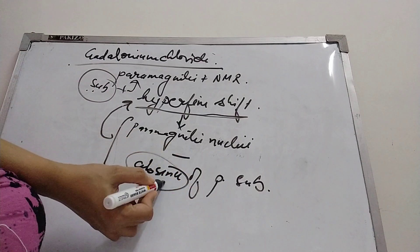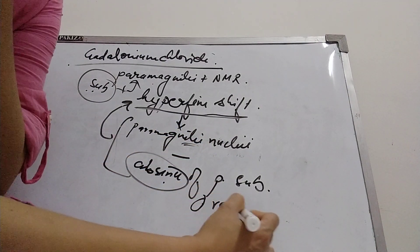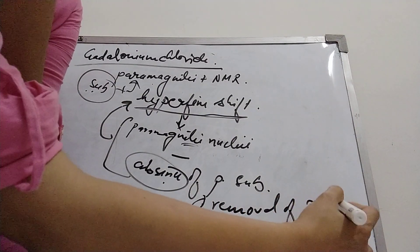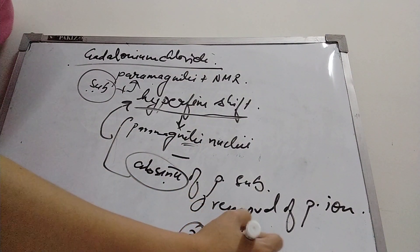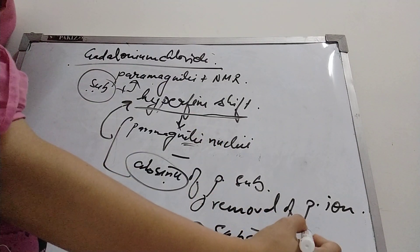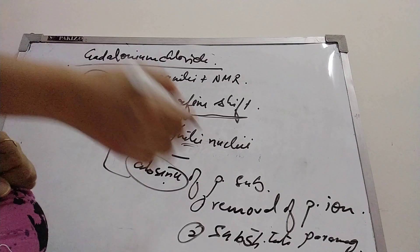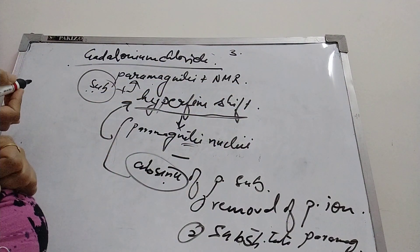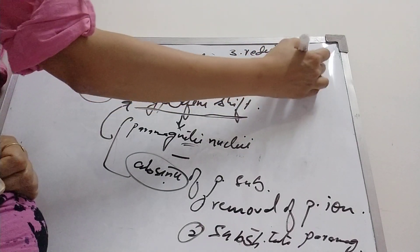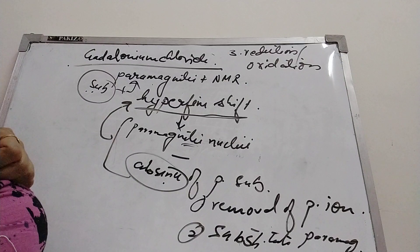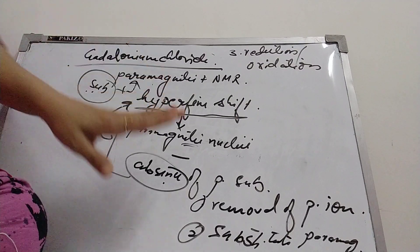There are three ways to determine hyperfine shift. First, we can remove the paramagnetic ions. Second, we can substitute a paramagnetic ion with a different one. Third, we can substitute the ion or change the oxidation state so that it changes to a diamagnetic substance. These three approaches allow us to measure and understand the hyperfine shift.